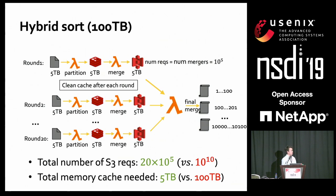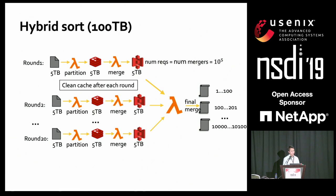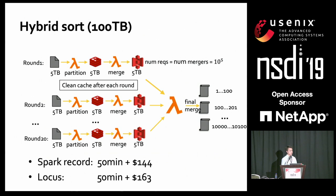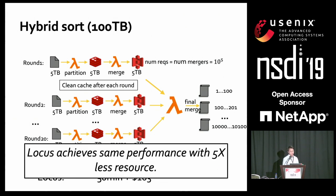This is not a free lunch — we make a tradeoff of doing the shuffle in two passes. But because S3 bandwidth is nearly free and Lambda provides high elasticity, this tradeoff is worthwhile. By implementing this hybrid sort, we achieve close performance to the Spark record at 15 minutes for $163. Since Lambda unit price is five times more expensive than VMs, Locus effectively achieves similar performance to Spark with five times fewer compute resources.